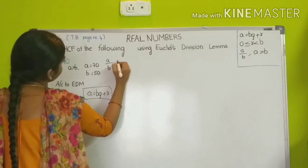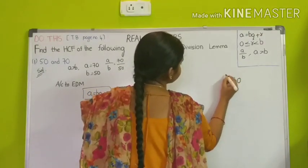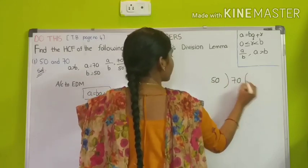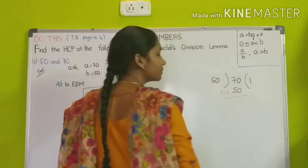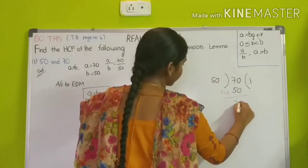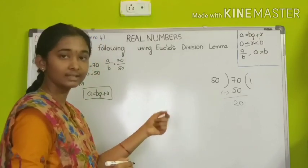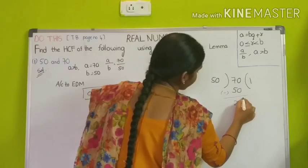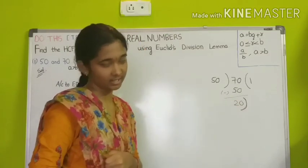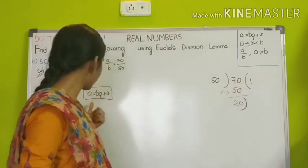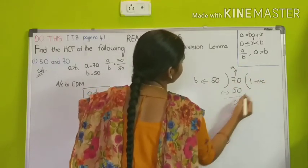A by B is equal to 70 by 50. We divide: 50 ones are 50, so we write quotient 1 and 50 below. 70 minus 50 is 20, so the remainder is 20. The remainder didn't become 0, so we continue the division. We now write the A, B, Q, and R values and substitute into the equation A is equal to B into Q plus R.